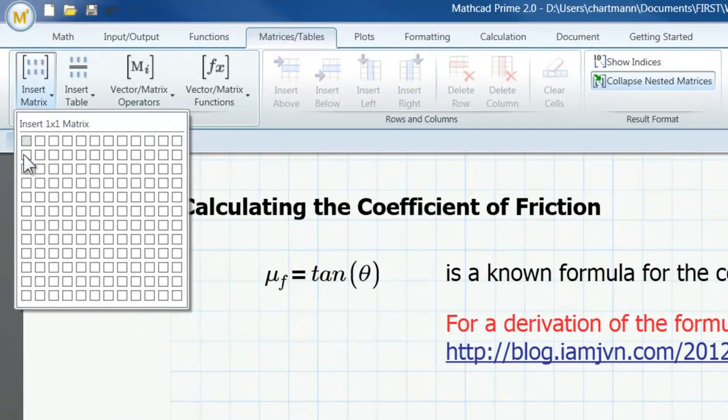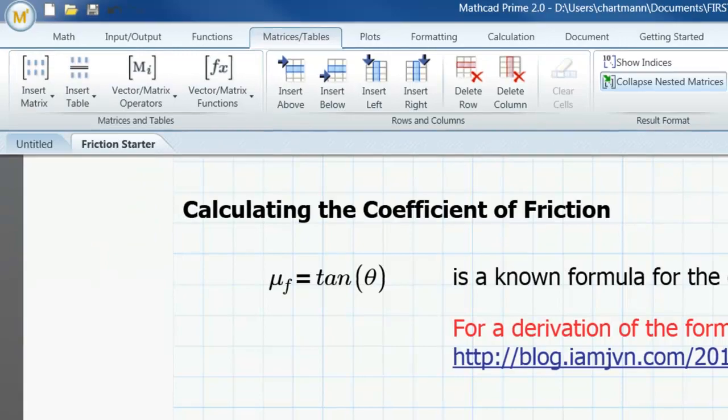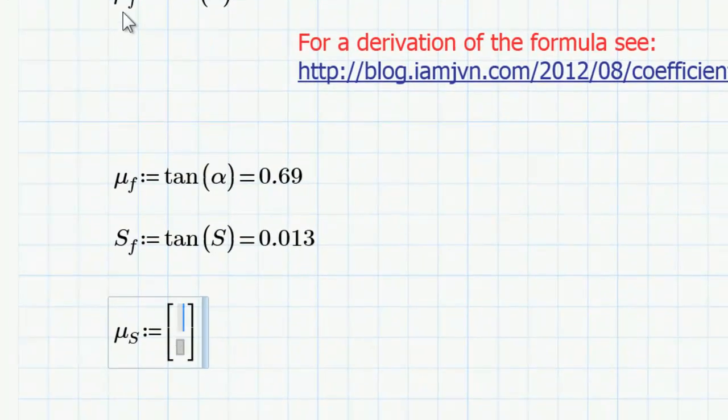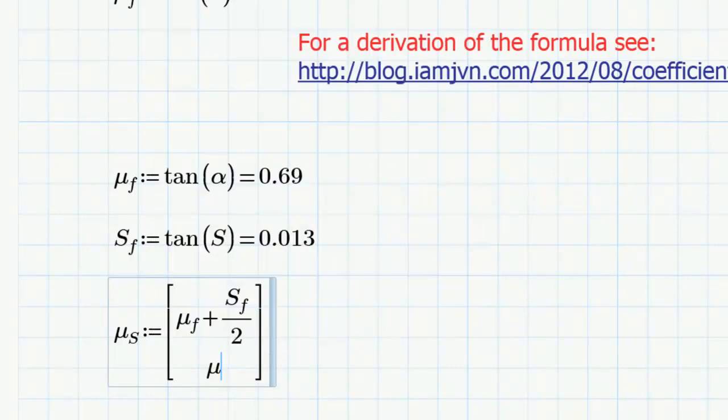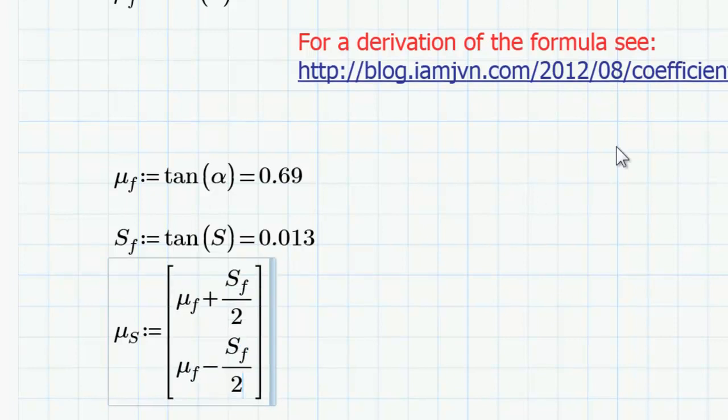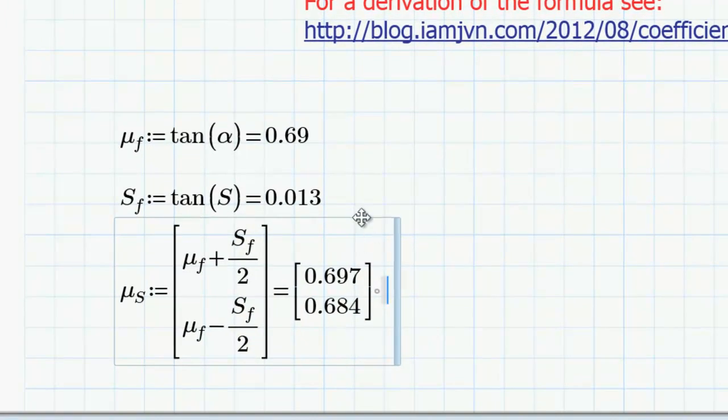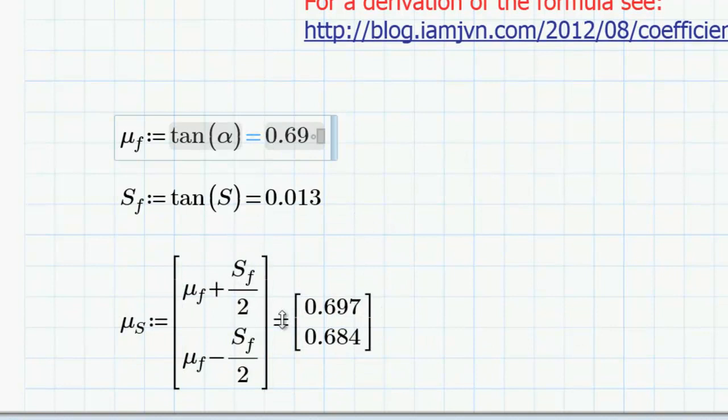And what this is going to be is mu sub f using my symbols. Mu subscript f. And then plus s subscript f divided by 2. And again, mu subscript f minus s subscript f divided by 2. And when I evaluate that, I get a range around my coefficient of friction. So I could use these values to establish either a more conservative or a more liberal coefficient of friction and be safe because I'd be within a standard deviation of my statistical data.